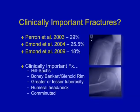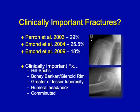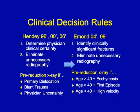The clinically important fractures as defined include Hill-Sachs, bony Bankarts or glenoid rims, greater or lesser tuberosity fractures, humeral head and neck fractures, and comminuted fractures — those are what we're concerned with on the field. Defining these clinically important fractures has led to several clinical decision rules in an attempt to eliminate unnecessary radiography.